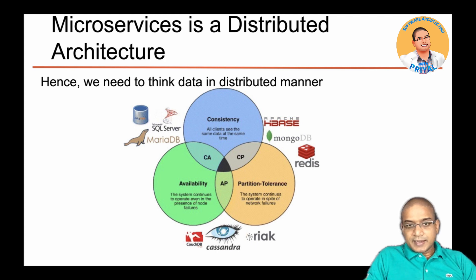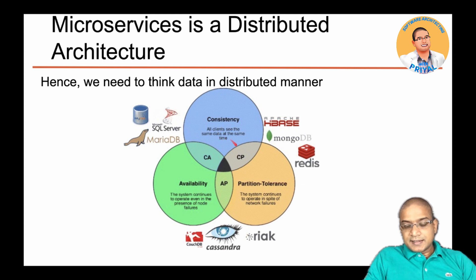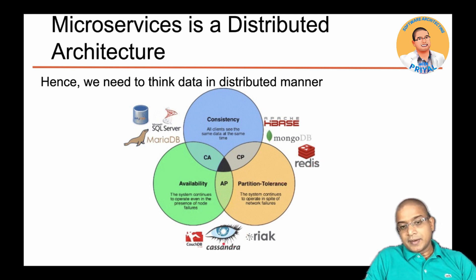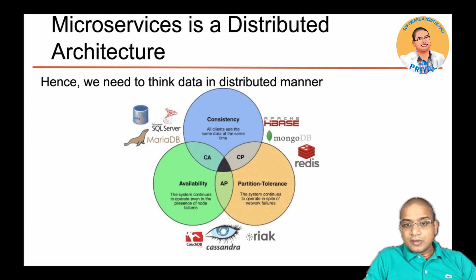If you take a traditional relational database, you have consistency and availability. But if you are working with consistency and partition tolerance, then MongoDB and Redis are the databases you need to work with. And if you are working with availability and partition tolerance only, then you have to go with CouchDB or Cassandra. How you select a database entirely depends on your business requirements and what you are trying to achieve in your distributed architecture.